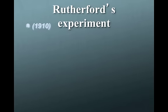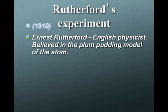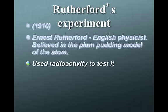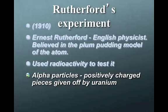Rutherford, 1910. Ernest Rutherford is, again, an English physicist, and he believed in J.J. Thomson's plum pudding model of the atom. And he wanted to confirm. Remember, in science, scientific method, we're always trying to either confirm or disprove others' scientific tests. So what he did, what Rutherford did, was he tried to use radioactivity in order to test this theory, this plum pudding model.